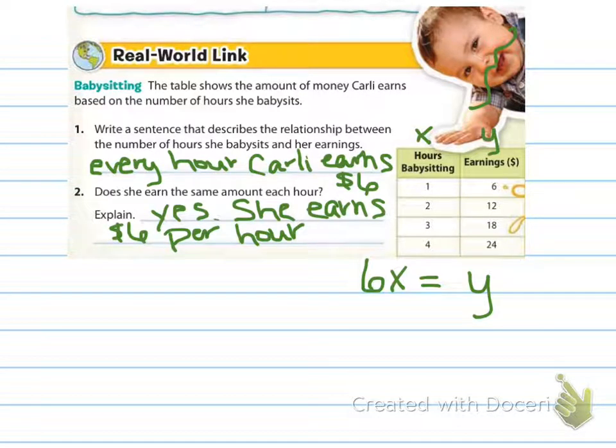All right, here are my answers. Basically Carly earns $6 per hour, and she does earn the same amount each hour. If you look over here, for one hour she earns $6, two hours she earns $12, three hours $18, four hours $24. So it's obviously going to be however many of the hours, which I'm calling my X, times six, and that's going to equal my earnings, which I'm calling my Y.